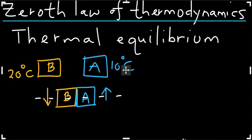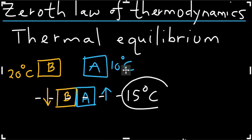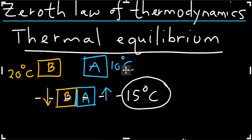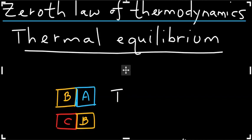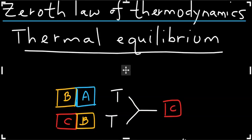When both bodies A and B reach the same common temperature — say, 15 degrees Celsius — we say they are in thermal equilibrium with each other. Now assume a third object C is in thermal equilibrium with object B at the same temperature T. What we can conclude is that object C and object A are also in thermal equilibrium with each other at temperature T. This is known as the zeroth law of thermodynamics.